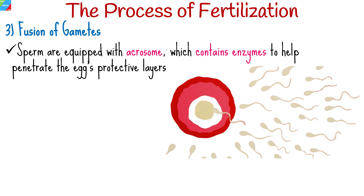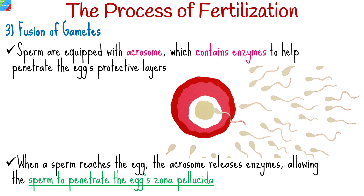The fusion of the sperm and egg membranes is a complex process. Sperm cells are equipped with a specialized structure called the acrosome, which contains enzymes to help penetrate the egg's protective layers. When a sperm reaches the egg, the acrosome releases these enzymes, allowing the sperm to penetrate the egg's zona pellucida and ultimately fuse with the egg's plasma membrane.